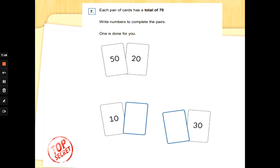Number seven. Each pair of cards has a total of seventy. Write numbers to complete the pairs. One is done for you. They always give you an example so you know what to do. We're trying to make seventy. So fifty add twenty is seventy. Because five tens add two tens is five, six, seven. And all of these are multiples of ten. They will all have a zero at the end. So ten add what is seventy? We've got one ten, we need seven tens. One add what is seven? One, two, three, four, five, six, seven. We need six tens and no ones. So we need sixty. Ten add sixty is seventy. What about this one? Something add thirty is seventy. We've got three tens. Three add what is seven? Three, four, five, six, seven. We need four tens and no ones. So we need forty. And you need to write a number in every box to get that point. Well done guys.